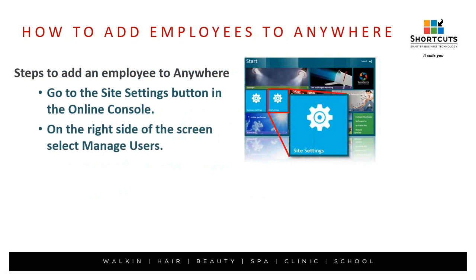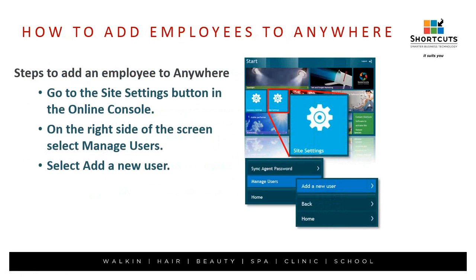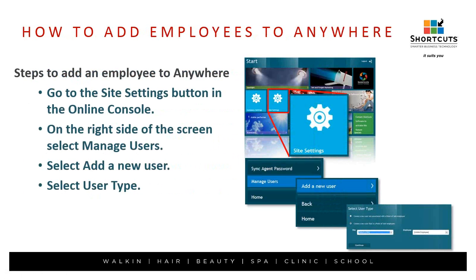To add an employee to Anywhere, go into site settings, then manage users, and add a new user. Select the site and then select the employee. For those of you already using Anywhere, you can go into your manage users section, search for existing users, edit them, and add the Appointment Operator checkbox, then save — giving current Anywhere users the added option to book or cancel appointments.